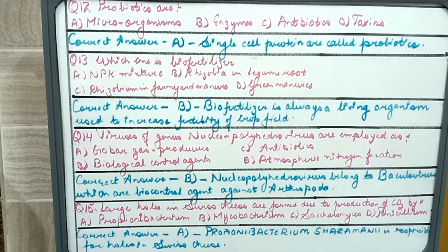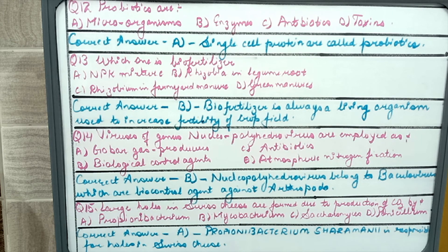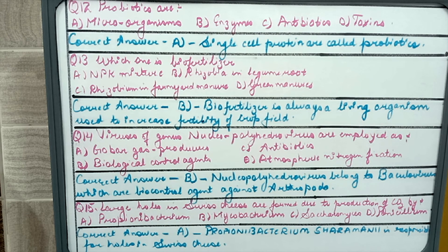Question 12: probiotics are microorganisms, enzymes, antibiotics, or toxins. This question may seem confusing but probiotics is another name of single cell protein. As we have already discussed in single cell protein we have microorganisms like Spirulina blue green algae. So correct answer would be option A.